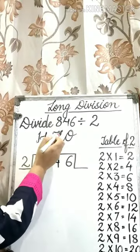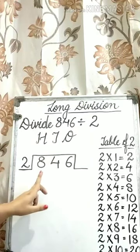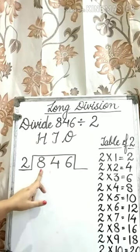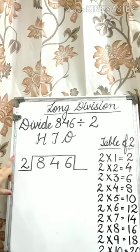Divide 846 by 2. Here the dividend is 846 and the divisor is 2.